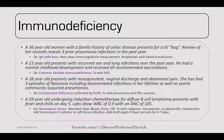Next case is a 28-year-old who presents with mucopurulent vaginal discharge and abdominal pain. She's had three episodes of Neisseria, including disseminated infections in her lifetime, as well as yearly community-acquired pneumonias. So this is a complement deficiency. It increases your risk of gonorrhea infections and can be confirmed with ELISA. You want to treat pneumonia and H-flu vaccines aggressively.